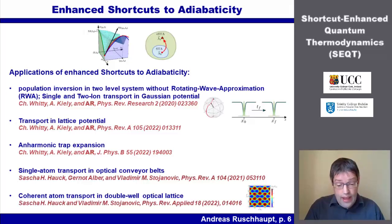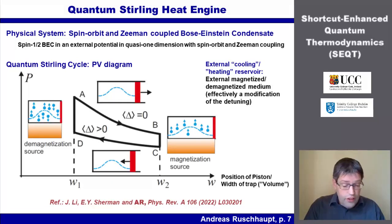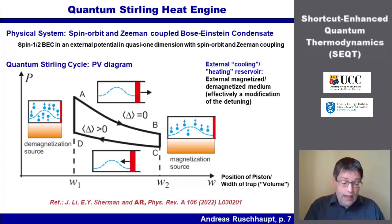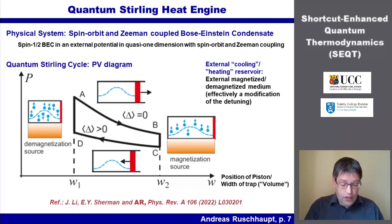In the meantime, enhanced STA has already been applied to several systems by my own group and also by the group of Vladimir Stochanovic. In addition to the development of enhanced STA, we have also introduced and examined a new quantum Stirling heat engine. It is based on a Bose-Einstein condensate with Zeeman and spin-orbit coupling, as well as magnetized and demagnetized media which play the role of the reservoirs. More details on this can be found in the publication shown here.